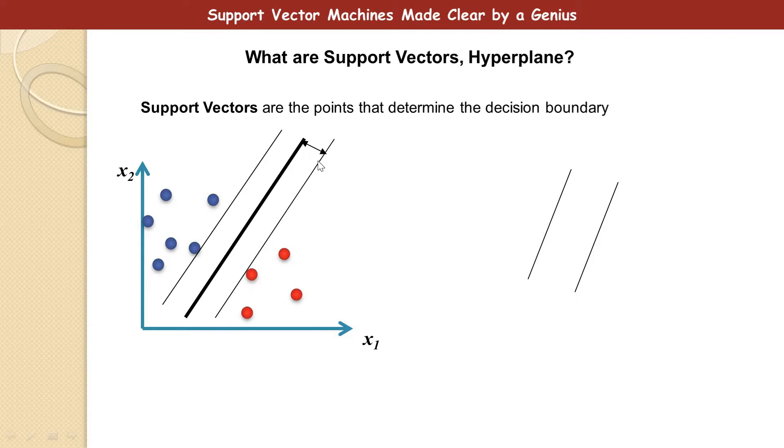These lines that are parallel to the decision boundary is not the Support Vector, they are actually gutters. They are not Support Vectors, but they are actually called gutters. And we are going to get back to these in a minute.